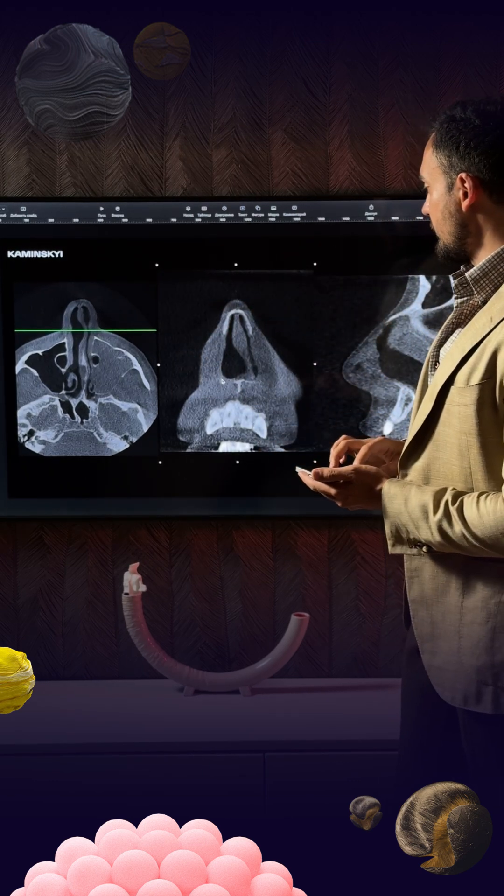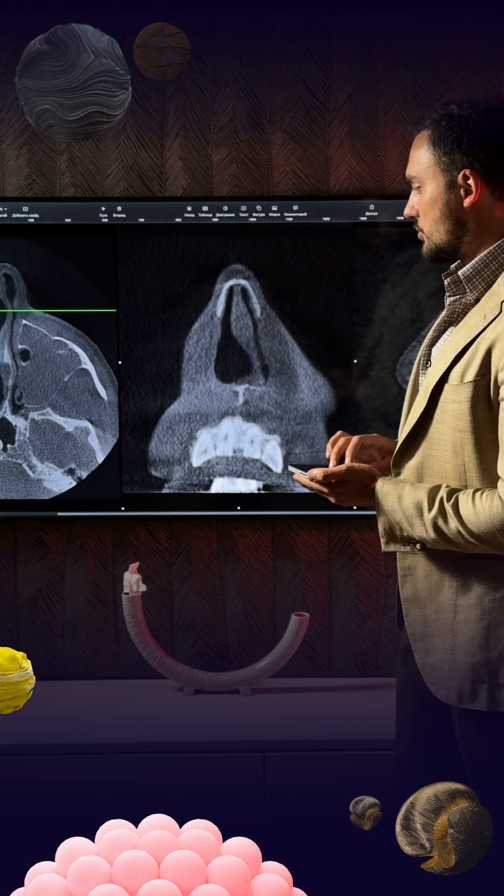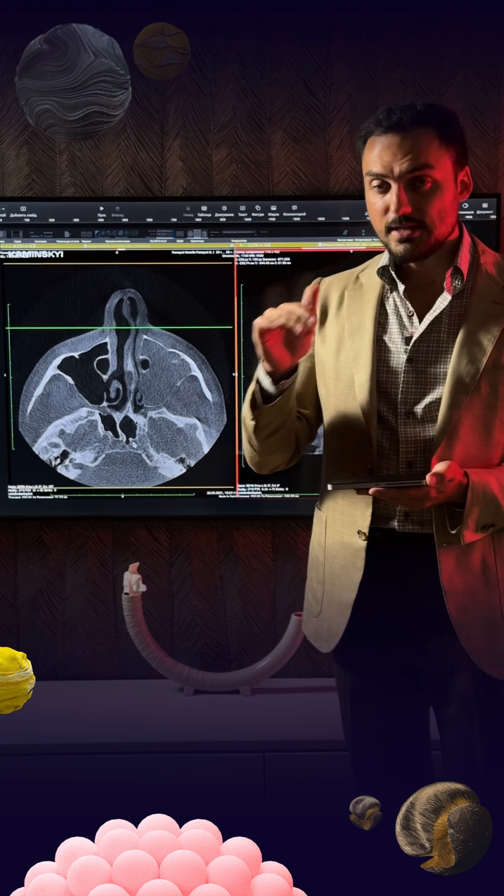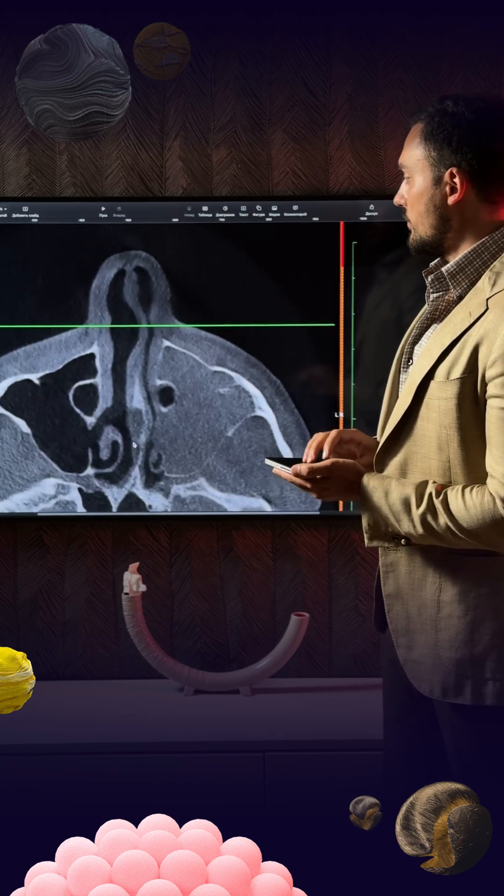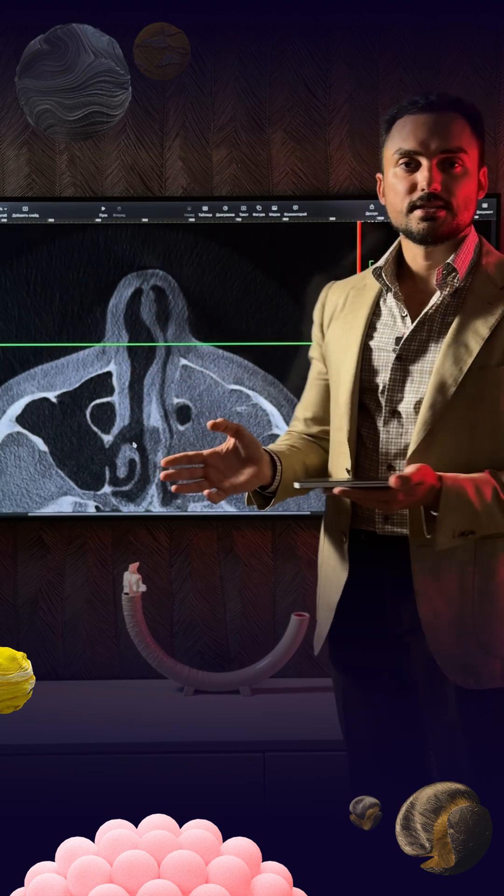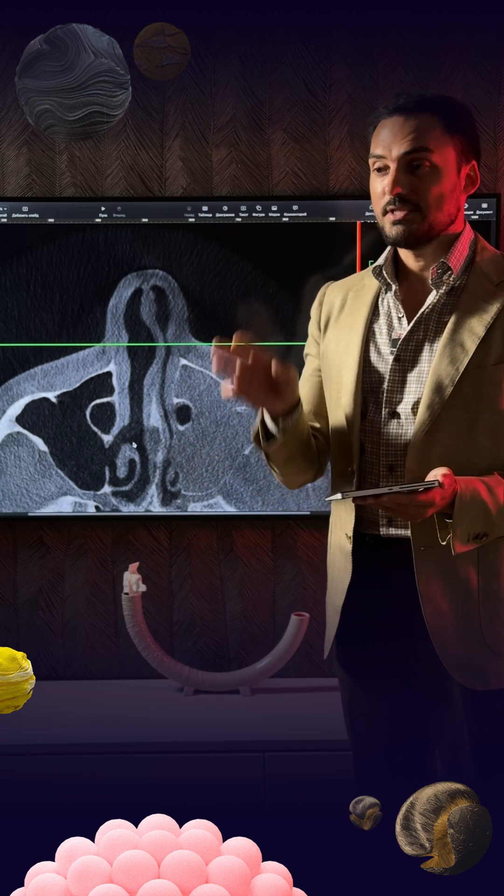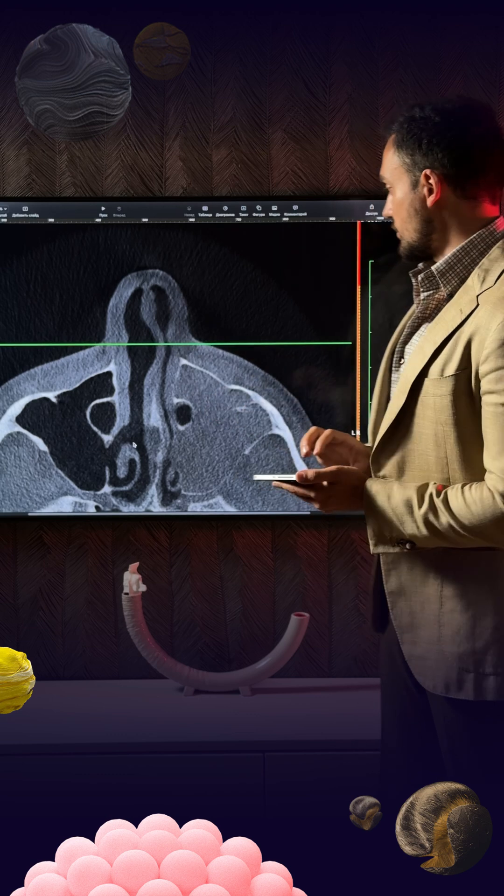But these pictures, these CT scans are very important to understand that previous technique that I tell you before will be not useful for this case. With this deviation, with this asymmetry of the septum, you can have huge complication if you will use classical preservation osteotomy. Why?